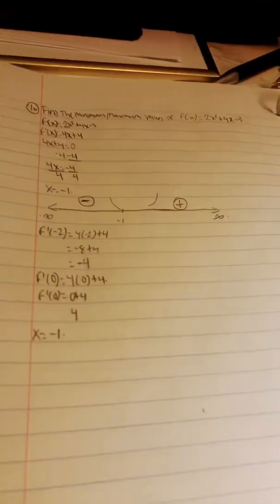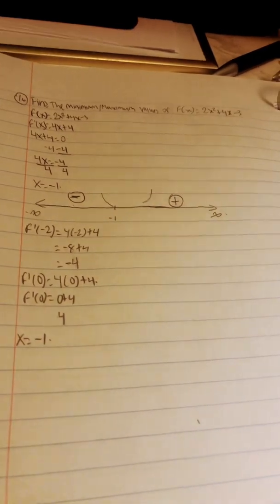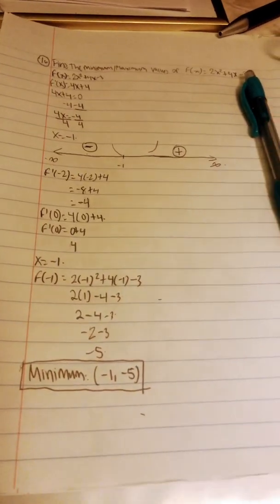So at x equals negative 1, there's a minimum, and evaluate negative 1 for f of x. This is your minimum value.